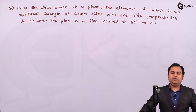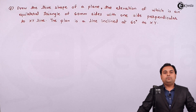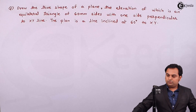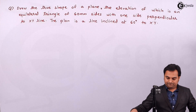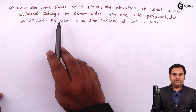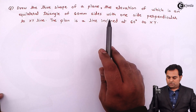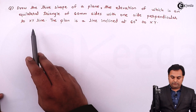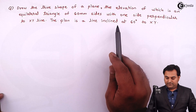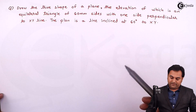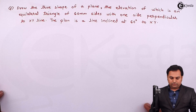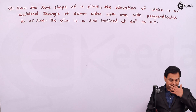Hello friends, in this video we are going to see a problem on projection of planes. The question is: draw the true shape of a plane, the elevation of which is an equilateral triangle of 60 mm sides with one side perpendicular to the XY line. The plan is a line inclined at 60 degrees to XY. I'll be explaining the conditions step by step.